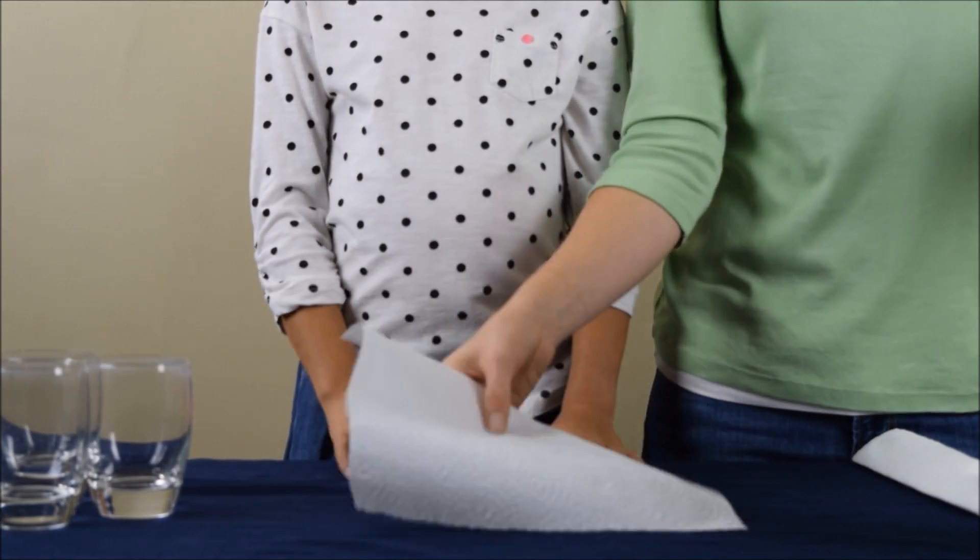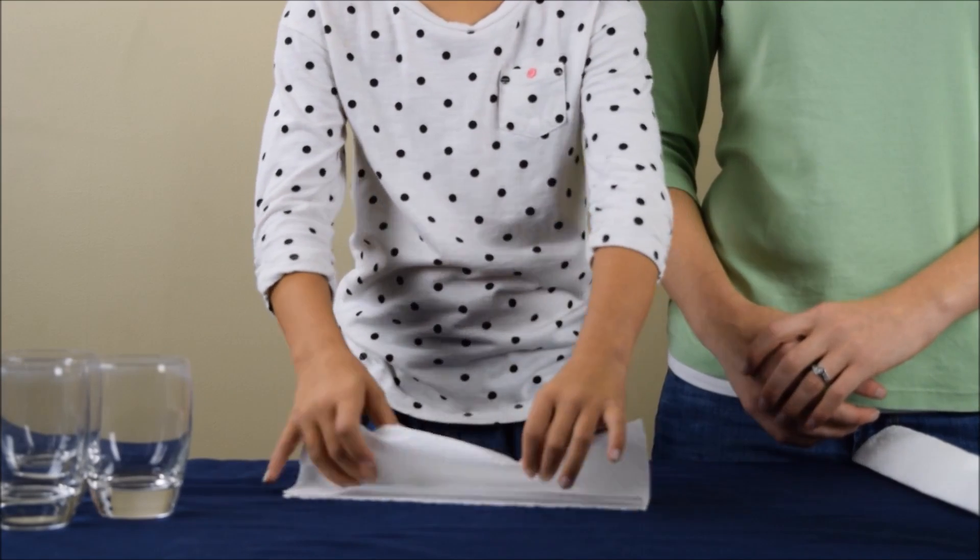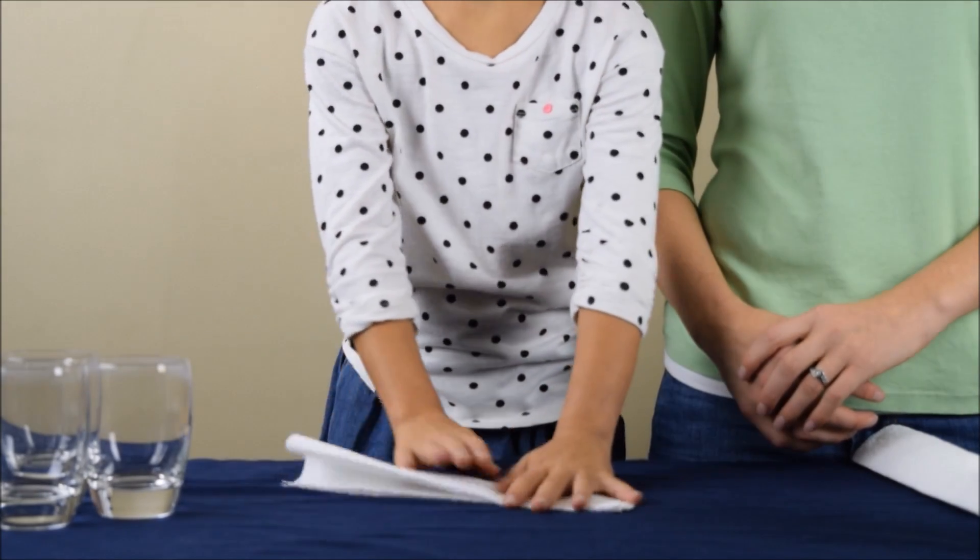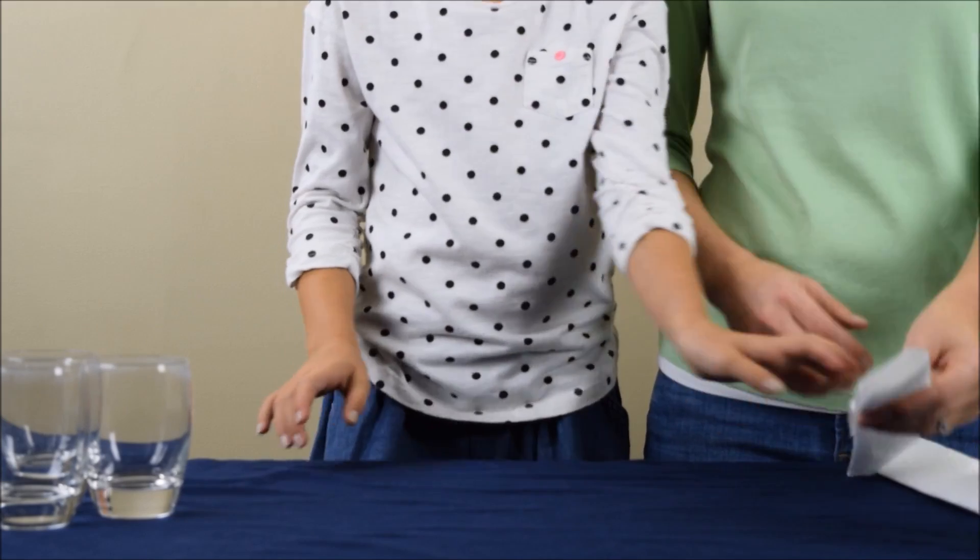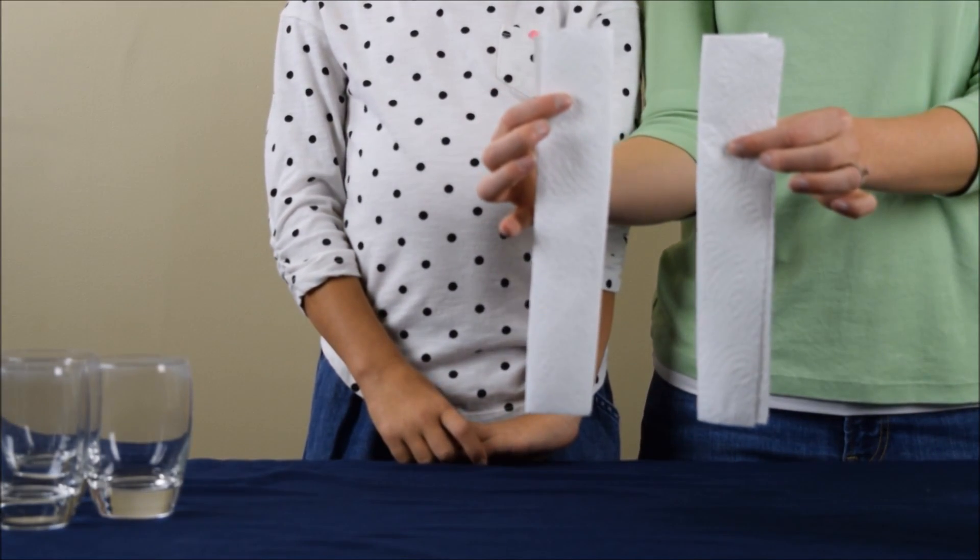Now I'm going to pull off another square and again we're going to fold it in half once and fold it in half twice. So now we have two paper towels about one and a half inches wide.